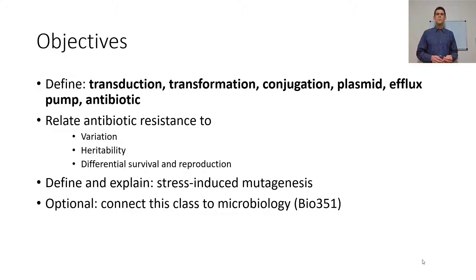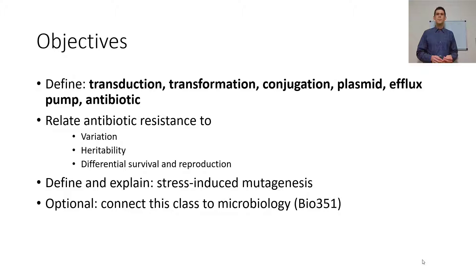I want you to be able to define transduction, transformation, conjugation, plasmid, efflux pump, and antibiotic — something that kills the bacteria. Relate antibiotic resistance to variation, heritability, and differential survival and reproduction.